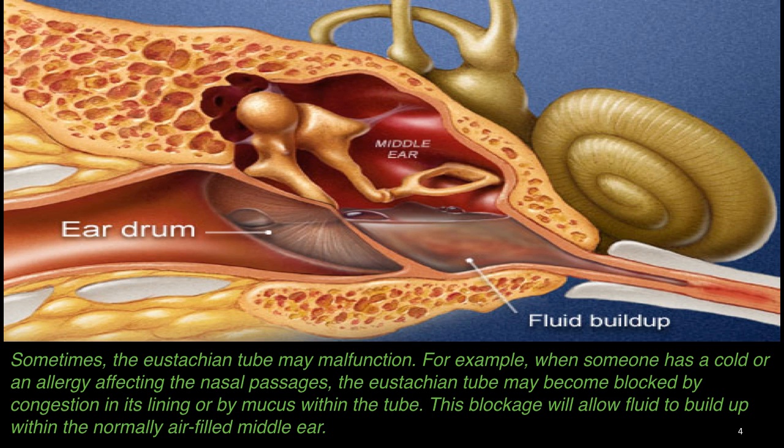Sometimes the eustachian tube may malfunction. For example, when someone has a cold and allergy affecting the nasal passages, the eustachian tube may become blocked by congestion and its lining by mucus within the tube itself. This blockage will allow fluid to build up within the normal air-filled middle ear.